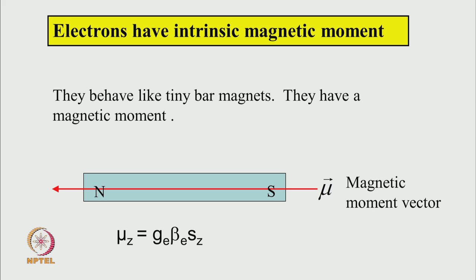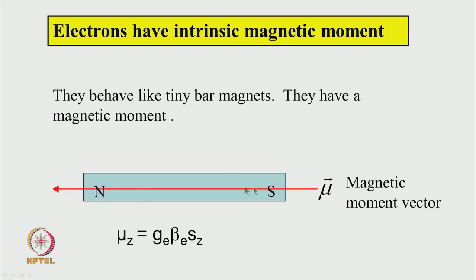The electron therefore has an intrinsic magnetic moment — it behaves like a tiny bar magnet. A bar magnet has a magnetic moment mu, and its direction goes from south to north. The relation between magnetic moment and angular momentum is given by: μ_z = g_e β_e s_z, where μ_z is the component of the magnetic moment vector in a given direction, g_e is the proportionality constant called the g-factor, β_e is the Bohr magneton, and s_z is the component of spin angular momentum.